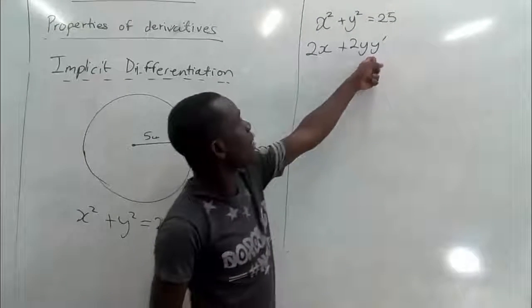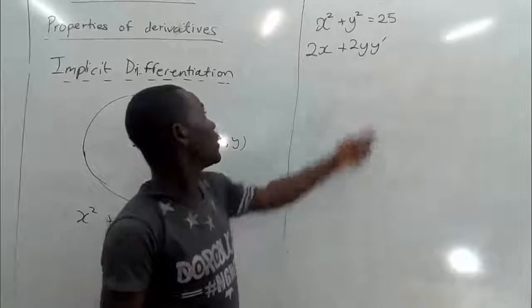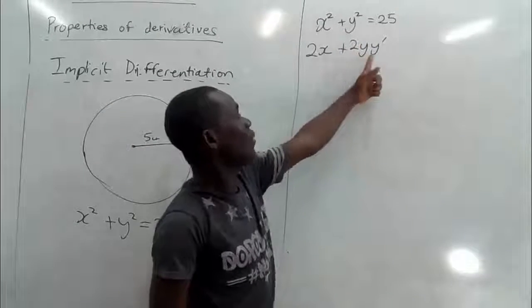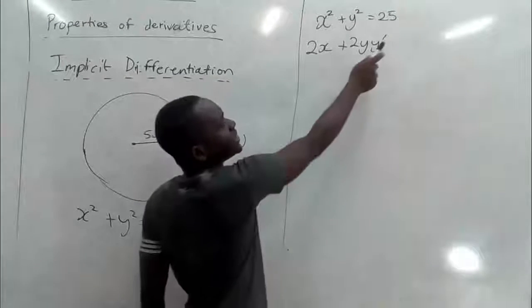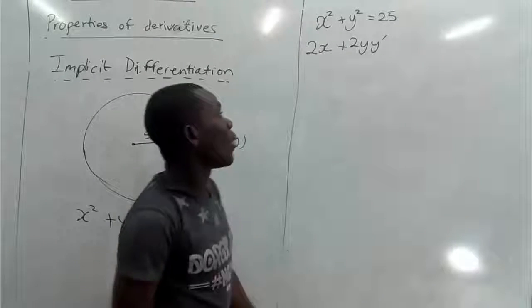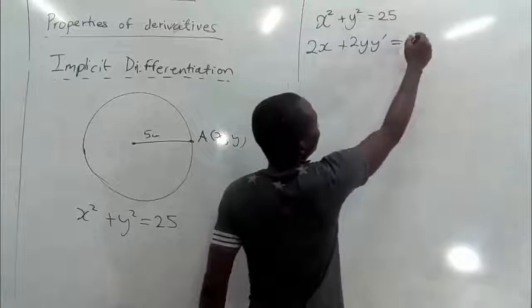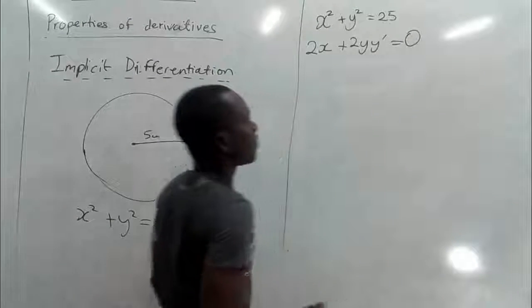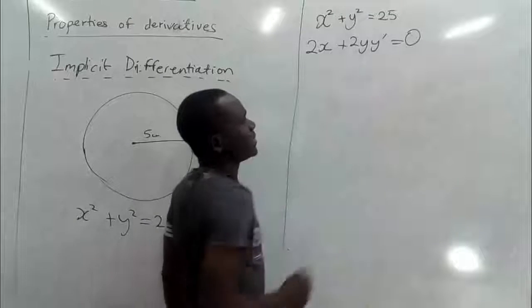We are going to take this y times y prime. So when we differentiate y we add y prime to it. So if you differentiate y that is to show that you are differentiating in terms of x. And also when you differentiate 25 you get 0.